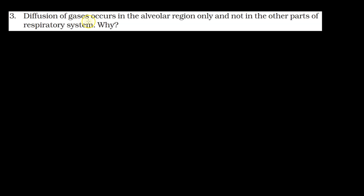The question is: diffusion of gases occurs in the alveolar region only and not in the other parts of the respiratory system. Why? In this question we are asking why diffusion of gases is only in the alveolar region and not in the rest of the other parts.